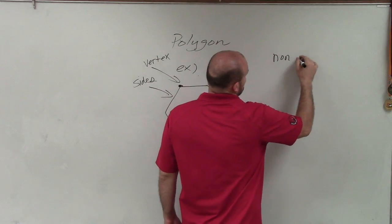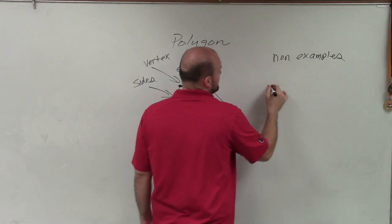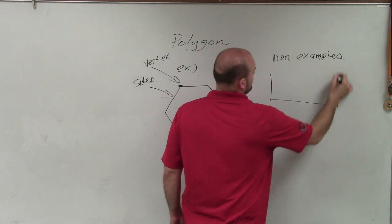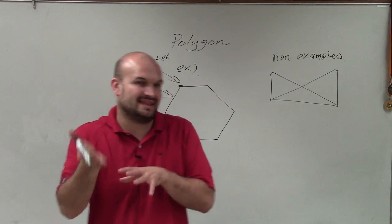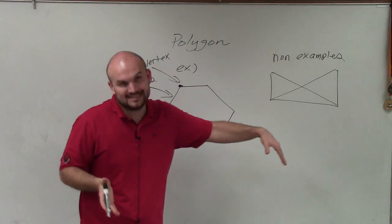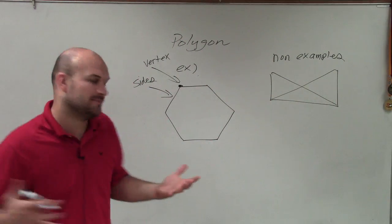Some non-examples would be like one. This is not a polygon, where you can see that the sides intersect each other and therefore creating three different figures. So it's not creating a polygon.